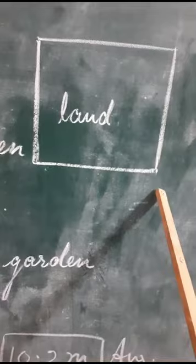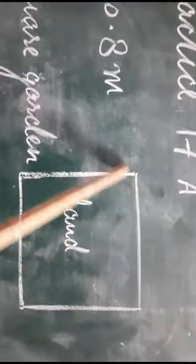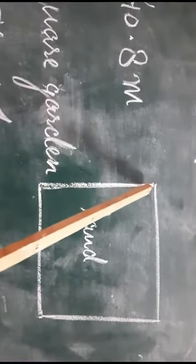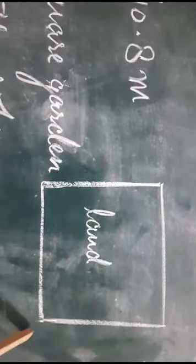The length of the rope is given as 40.8 meters. So if the rope has to cover this land for fencing, that means the perimeter of the land will be equal to the length of the rope.